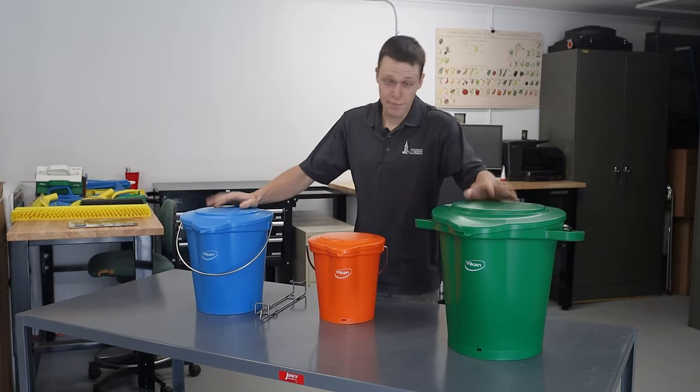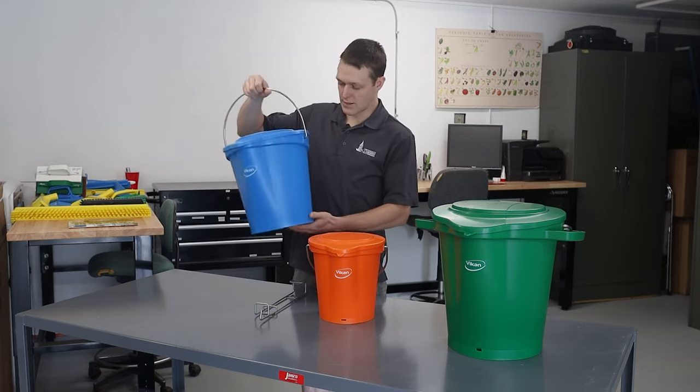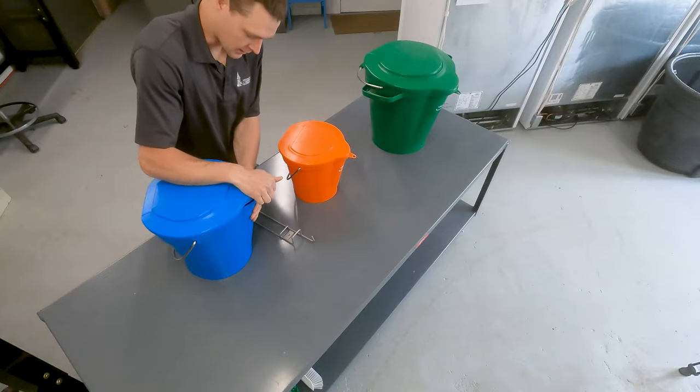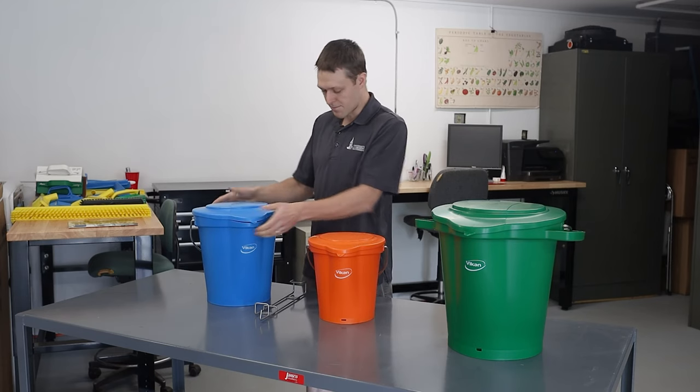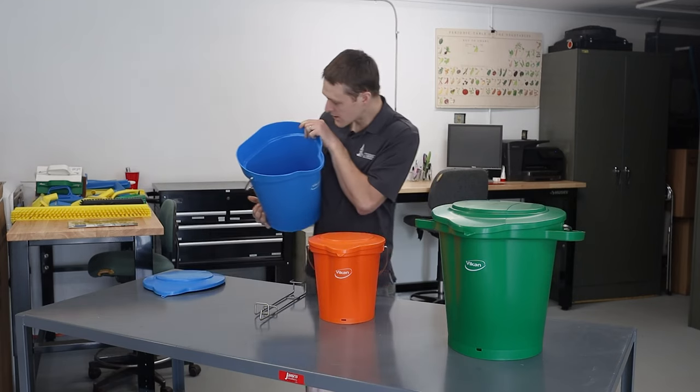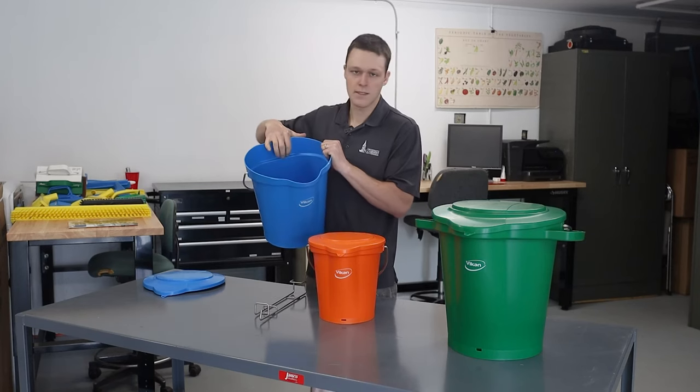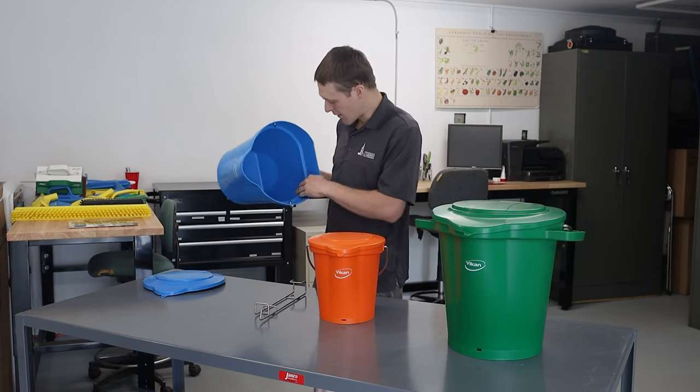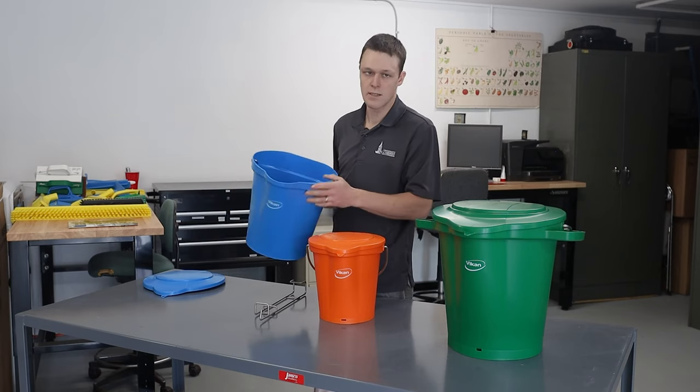Now, why spend extra money on a fancy bucket when a five gallon pail or a general bucket will do? Well, they do have some advantages. Not only does it have a really nice handle, but it's molded in the back so it's easy to grasp and pour out when you're done. It's got a handy hook here so you can hang up the lid. It has a lid, which is also a nice feature to keep dust and debris or to discourage use for anything besides cleaning. And then on the inside, there are some measurements as well. So you can add in the appropriate ratios of cleaning solutions or sanitizers. You can mix that up based on the measurements here.